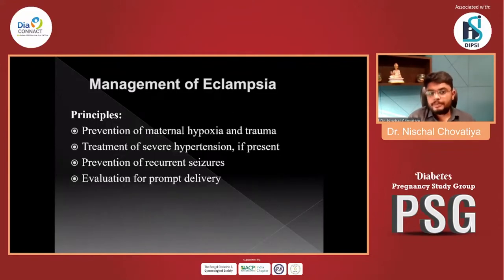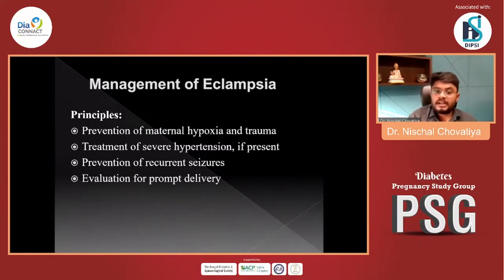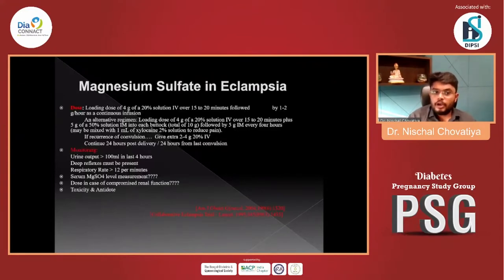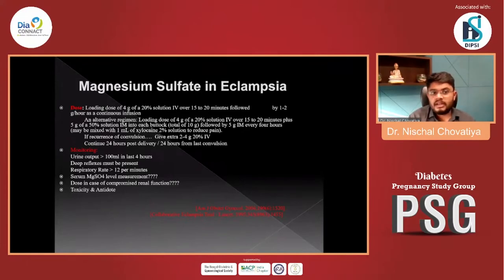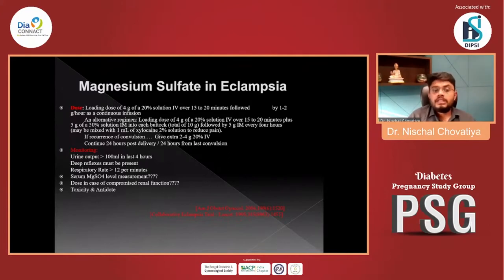Management of eclampsia: prevent maternal hypoxia and trauma, treat severe hypertension if present, prevent recurrent seizures, and evaluate for prompt delivery. Magnesium sulfate: 4 g IV over 15–20 minutes, followed by 1–2 g/hour as continuous infusion. Monitor urinary output, deep reflexes, respiratory rate, and serum magnesium level. Reduce dose in cases of compromised renal function; be aware of toxicity and antidote.